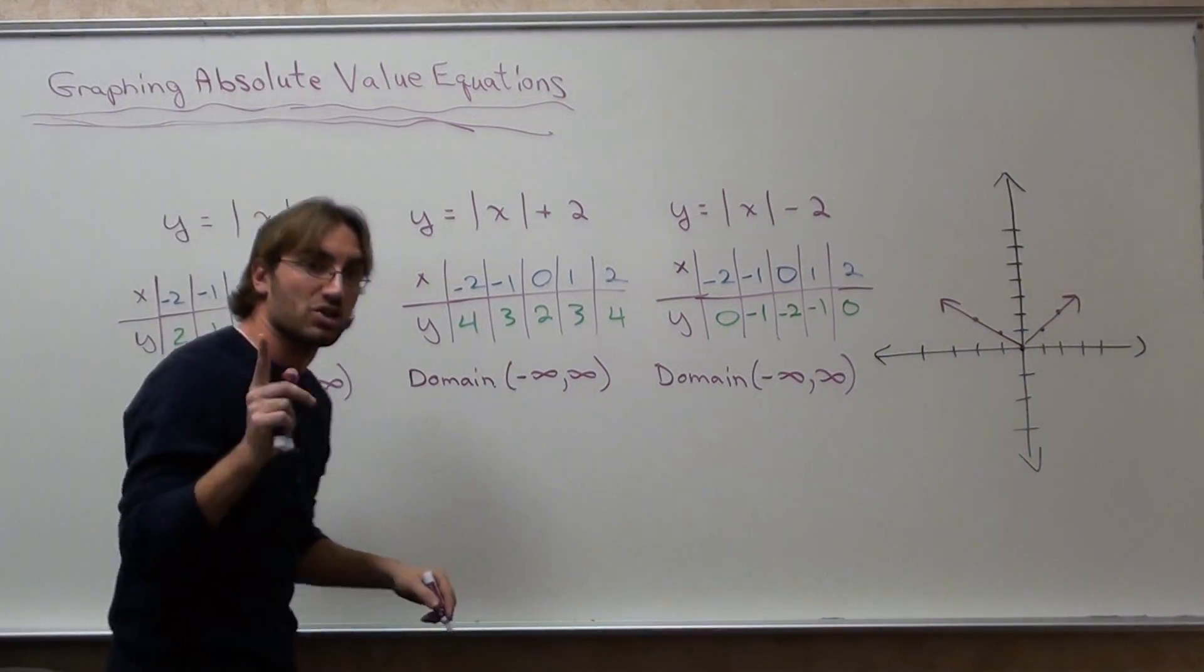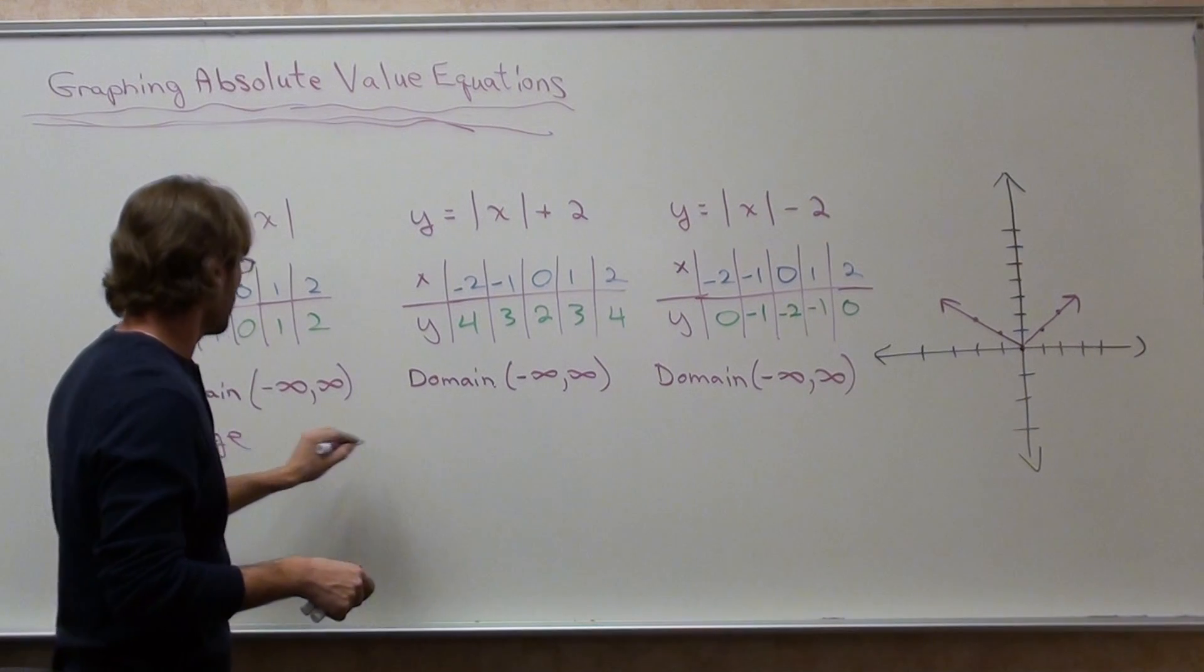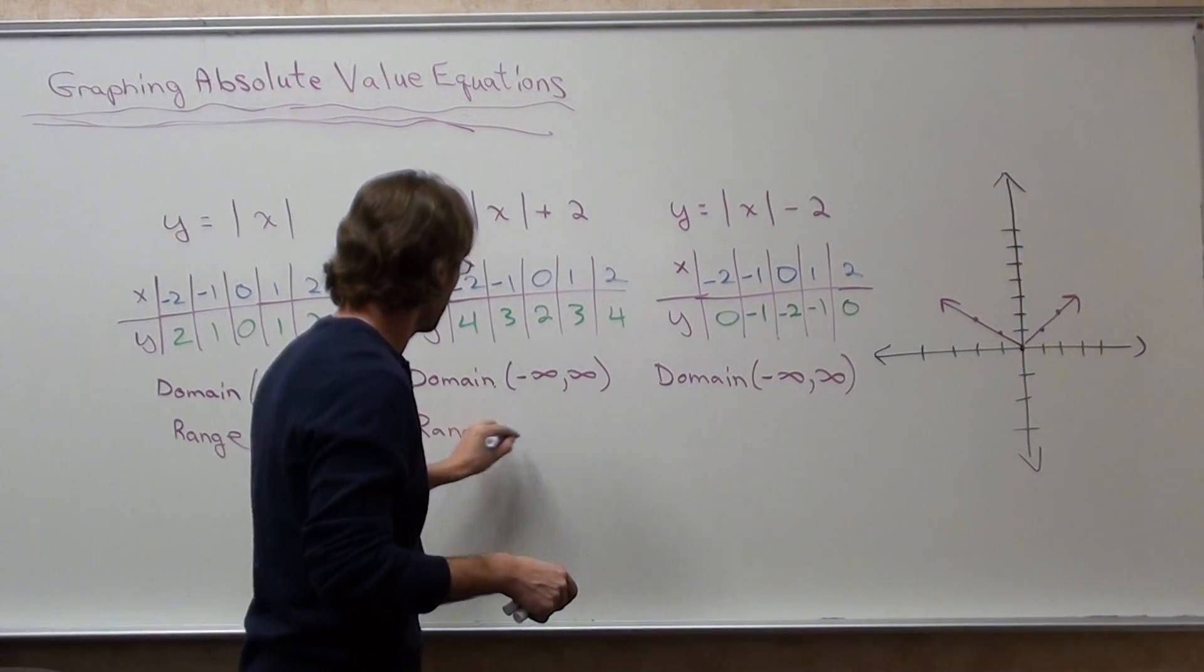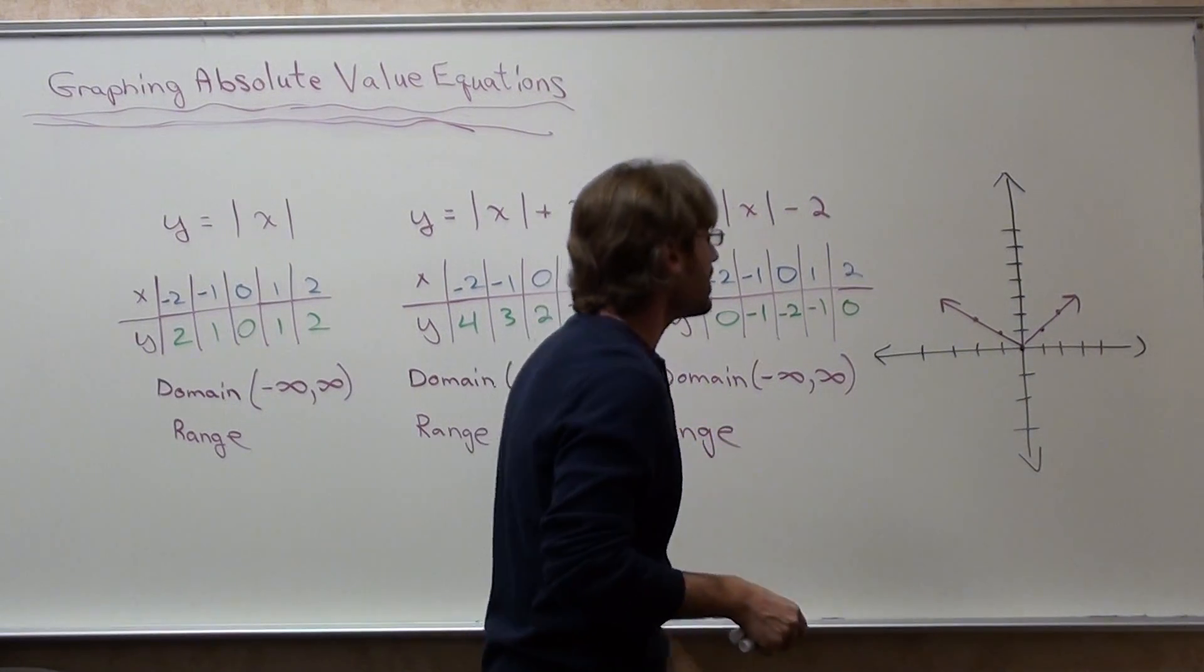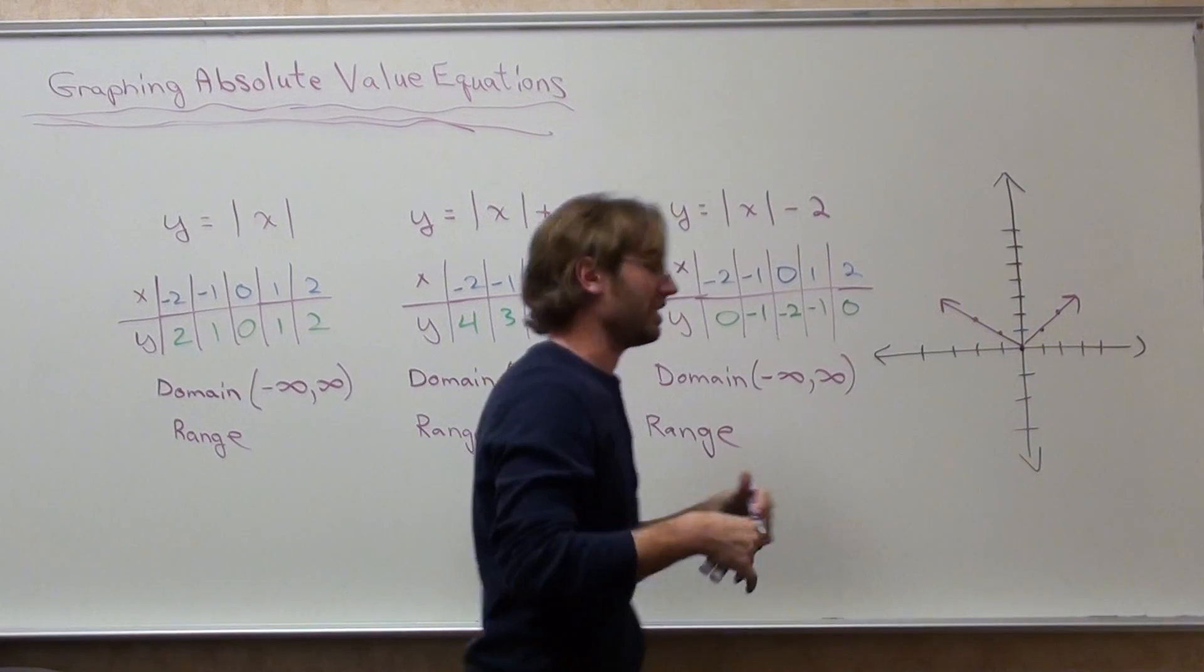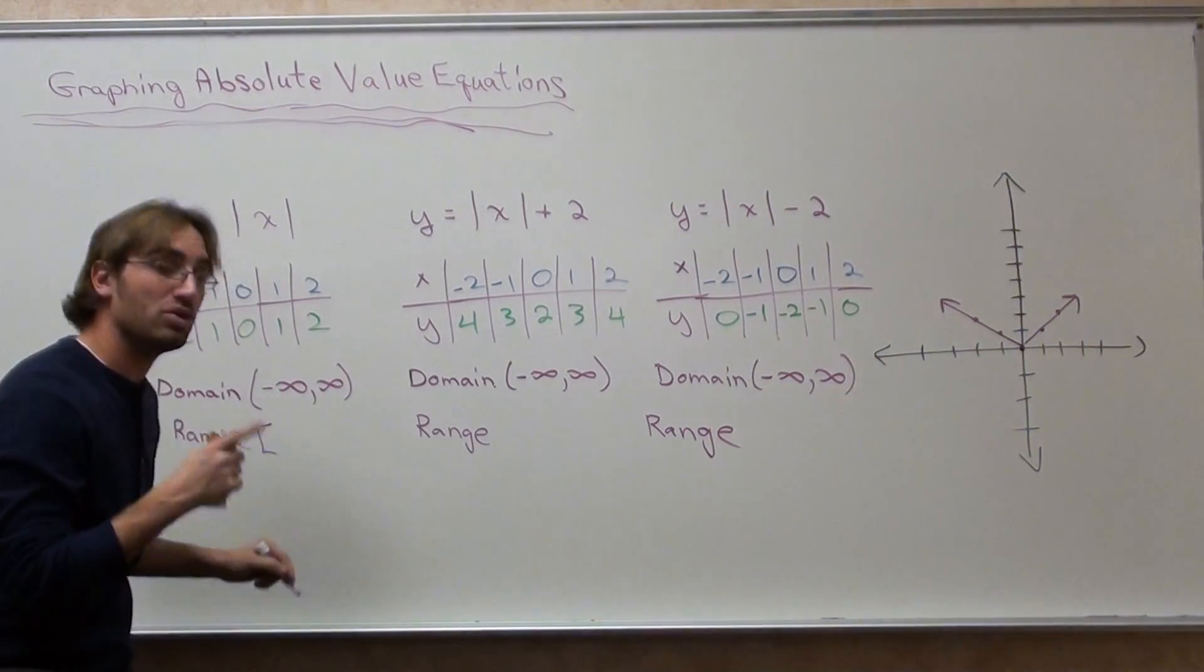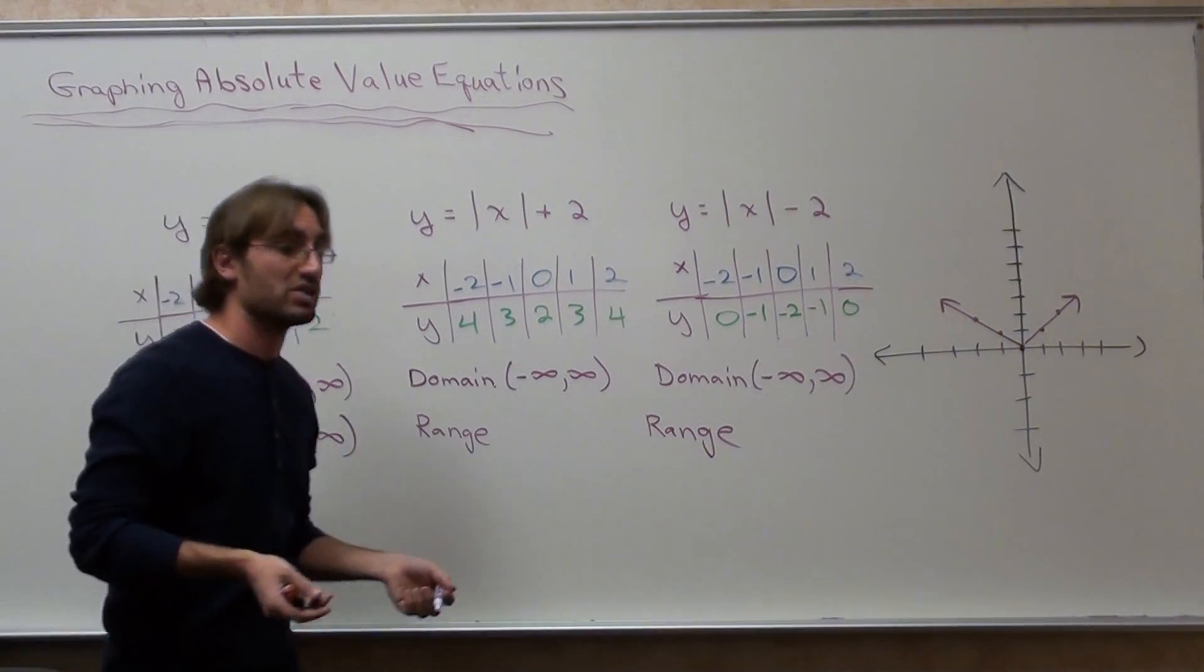The range, however, is going to be different. For this value, the lowest y value is 0 and goes up, so it's from 0 to infinity. It includes 0, which is why it's a square bracket. It never reaches infinity, which is why it's circular.